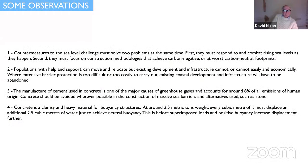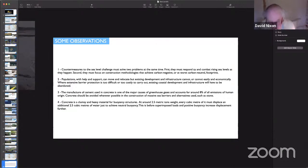In the course of doing this research, I've come up with some observations. These are not conclusions, they're not recommendations. These are merely thoughts that cropped up during this process which I wanted to share with you. The first one is that the countermeasures to sea level challenge must solve two problems at the same time. First, they must respond to and combat rising sea levels as they happen. But second, they must use construction technologies that themselves achieve carbon negative or at worst carbon neutral footprints. You can't make the situation worse by trying to put in barriers and techniques that themselves contribute to global warming.